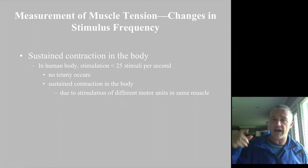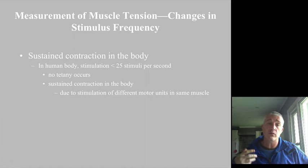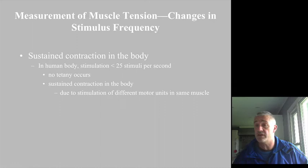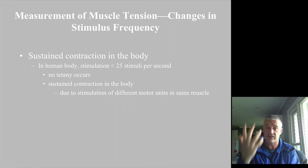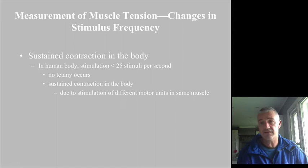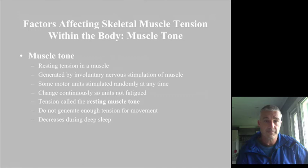In the human body, we cannot stimulate at greater than 25 cycles per second or 25 hertz. So in reality, in a human body we get no tetanus. Any sustained contraction in the body is actually achieved by cycling through different motor units within the muscle to sustain that contraction. If we electrically stimulate the muscle, we can actually put it into tetanus — in lab we could hook a muscle stimulator to your forearm and get a finger to contract so you could actually feel the tetanus.